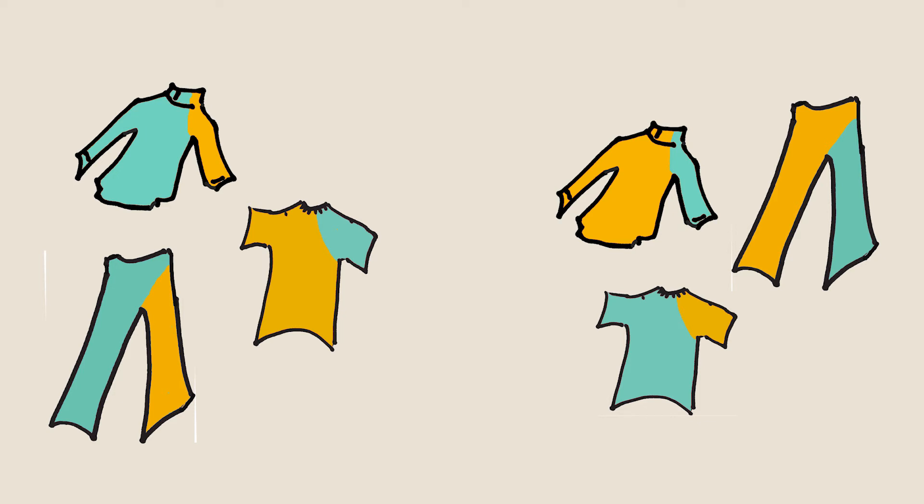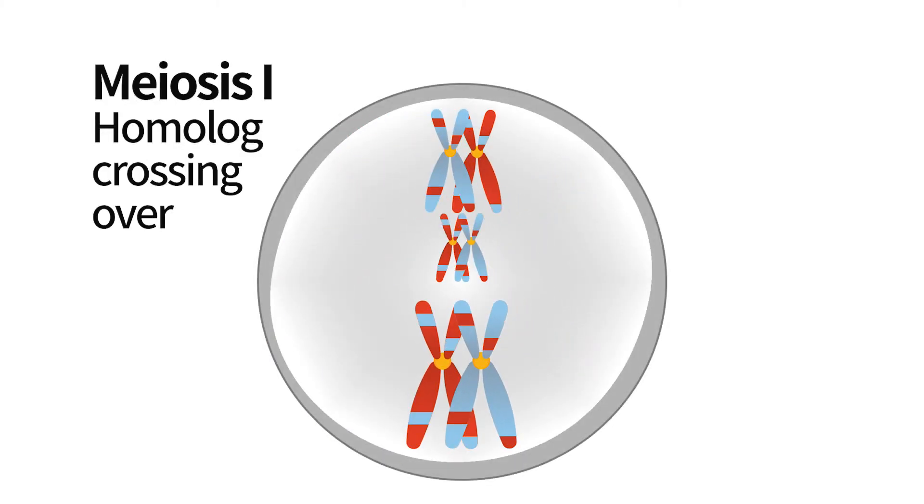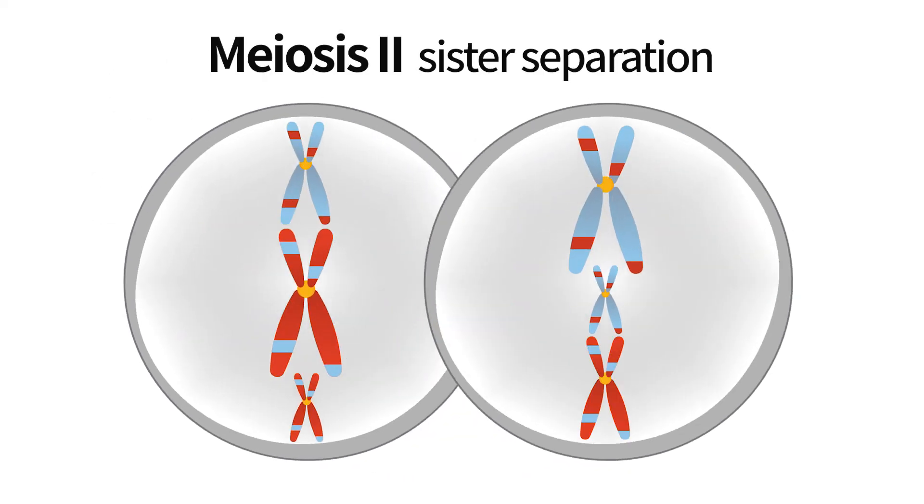We can thus summarize meiosis in this animation that shows both parts, homologues pairing and crossing over in their segregation in the first meiotic division, and sister separation in the second meiotic division.